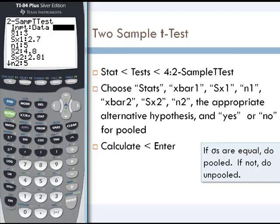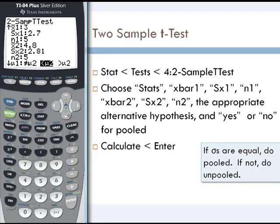Notice how close the sample standard deviations are, 2.7 and 2.81. Because they are so close we will probably assume that the population standard deviations are equal to each other. When we assume that the population standard deviations are equal to each other then we say yes, let's pool those standard deviations together into one standard deviation.